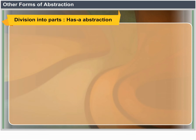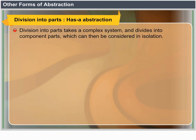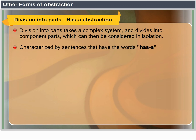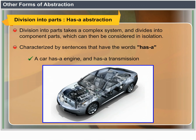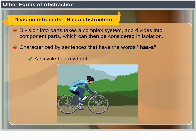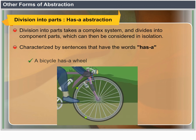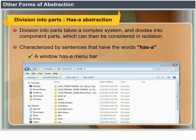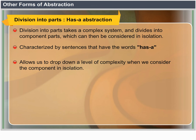Division into parts as an abstraction takes a complex system and divides it into component parts, which can then be considered in isolation. It is characterized by sentences using the words 'has a': a car has an engine and has a transmission; a bicycle has a wheel; a window has a menu bar. This allows us to drop down a level of complexity when we consider the component in isolation.